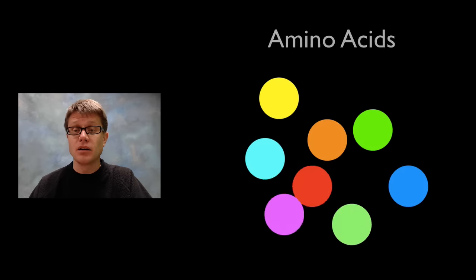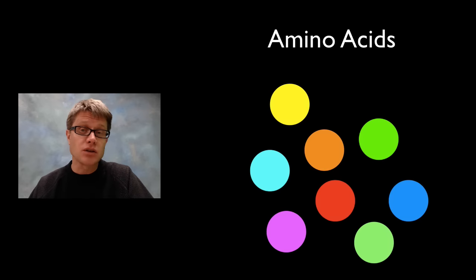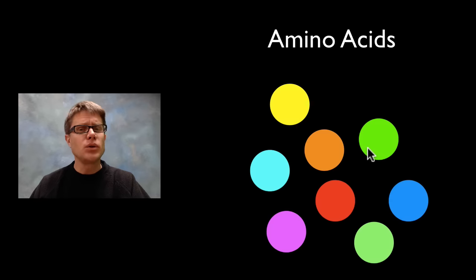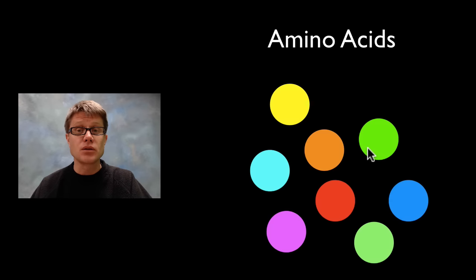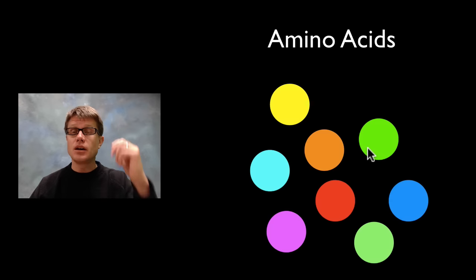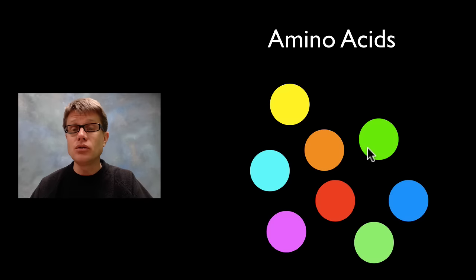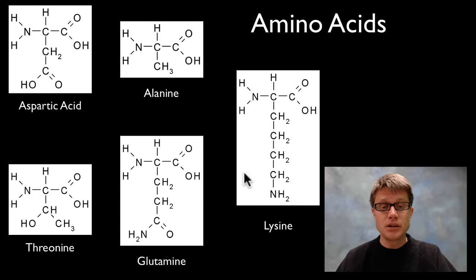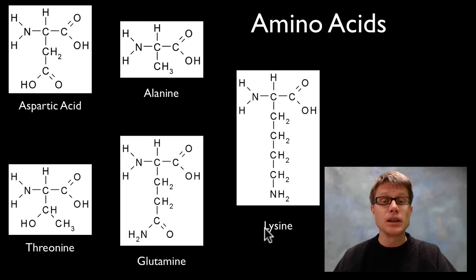Proteins are made of amino acids — most 7th graders understand that they're the building blocks of proteins. But where do we get those amino acids? We get them in our diet. Basically we eat proteins, break them down into amino acids, and then weave those back together into the proteins that make us. So the amino acids in my skin used to be part of my food — I literally am what I eat.